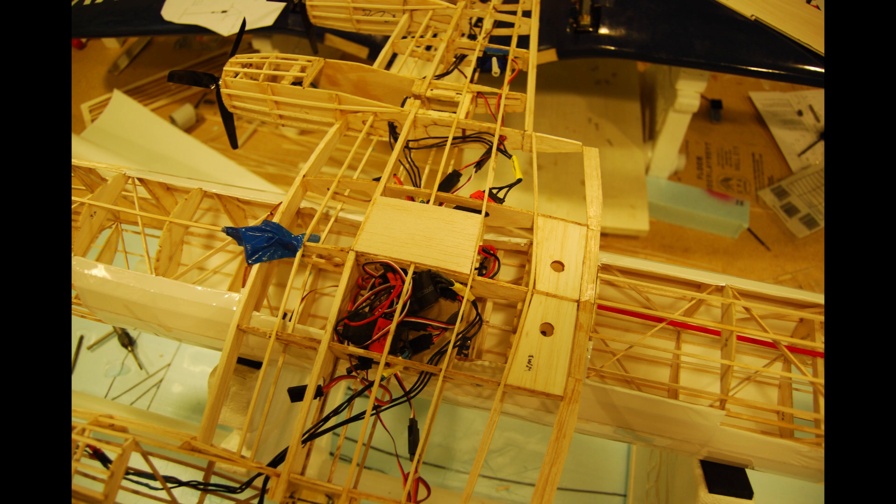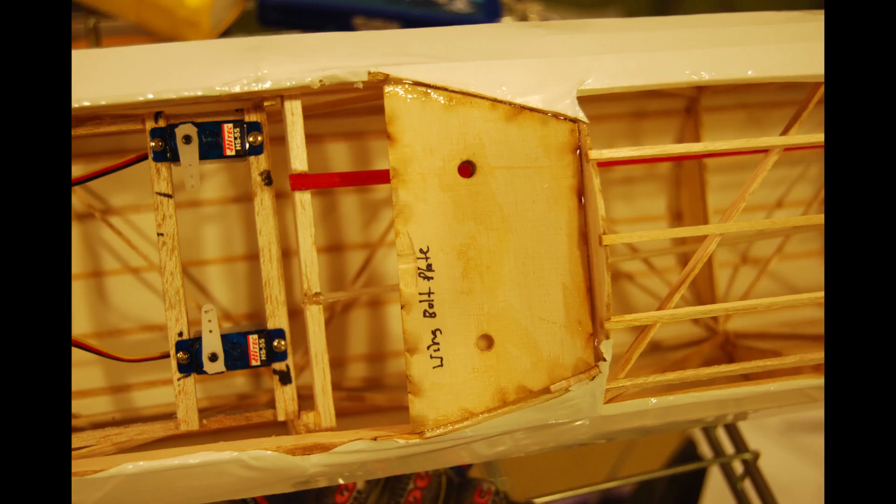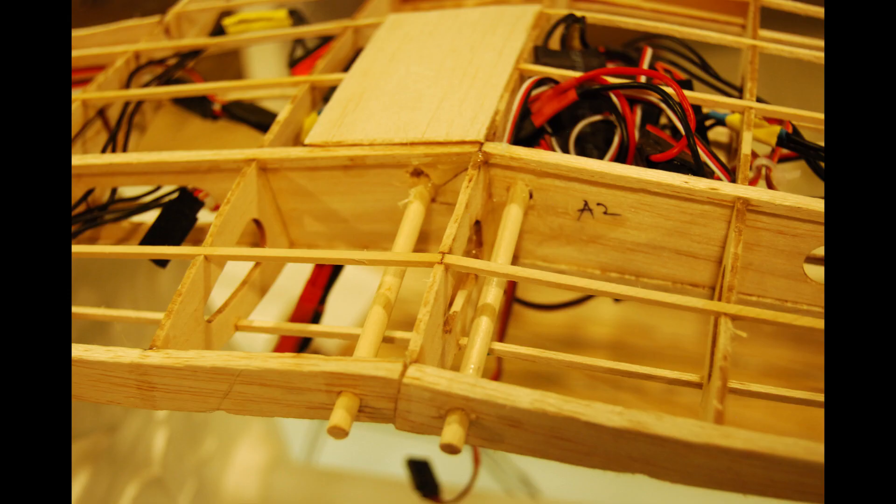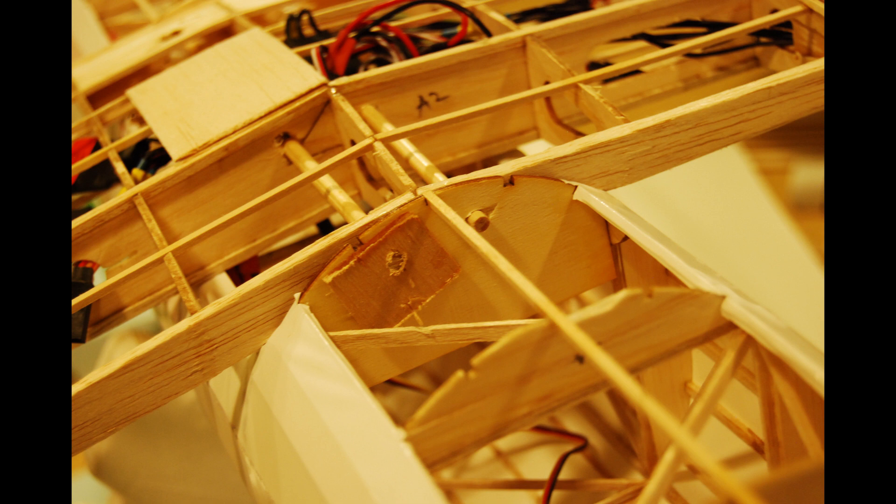Then I started the wing mount system by first adding the wing bolt plate. Drilled some 9-3 something holes in there, tapped it out with the nylon bolts I got, 1032. Then I added the dowels.